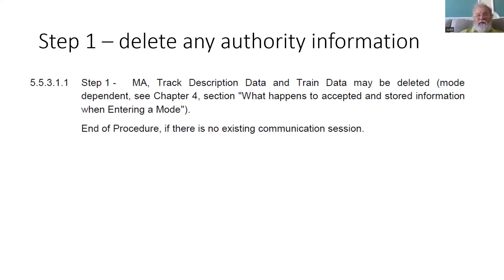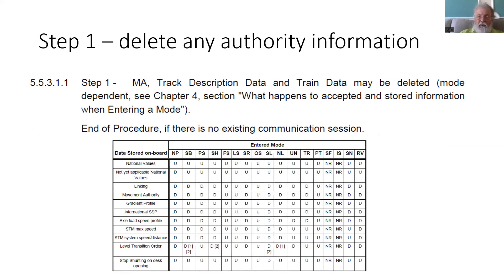So what happens when end of mission is detected and occurs? The first thing is that the onboard deletes any information around an authority that it was previously using. This is all detailed in chapter 4, where there is a long table that lists the information which is unchanged (U) or deleted (D) when entering a particular mode. We're interested in the second column SB, and as you can see, a large amount of the information associated with movement authorities is deleted — it is no longer relevant and you'll need to start another mission.